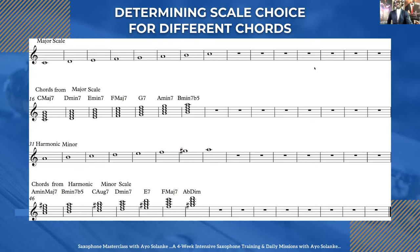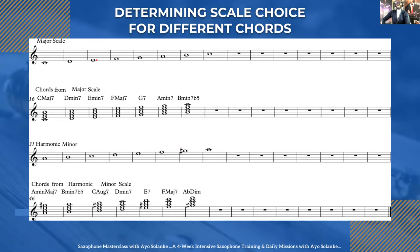This is the C major scale — we've spoken about this already. The major scale is like the base for everything in music. So we have C, D, E, F, G, A, B, C — from C to C, the C major scale.